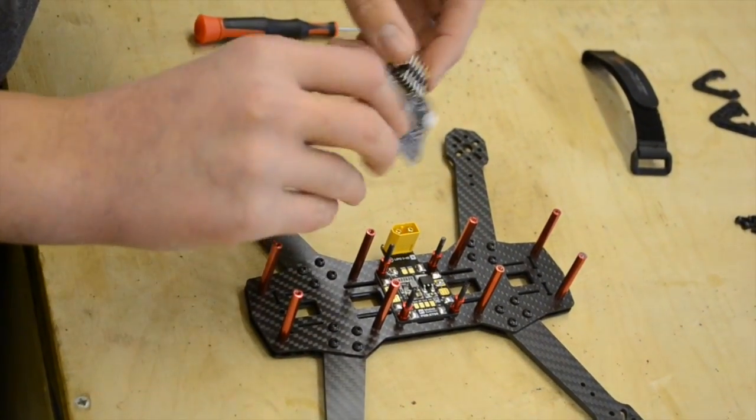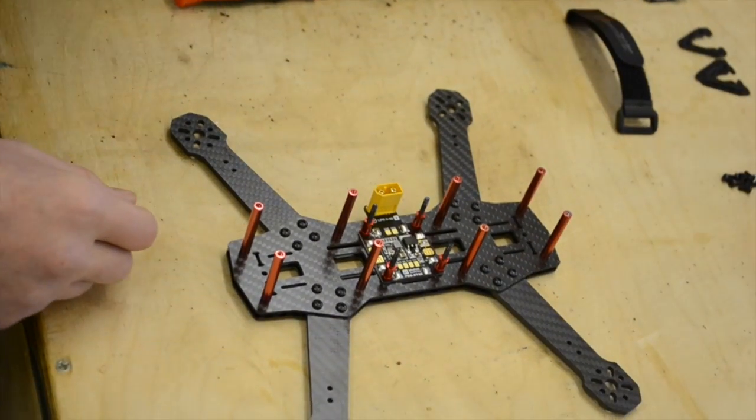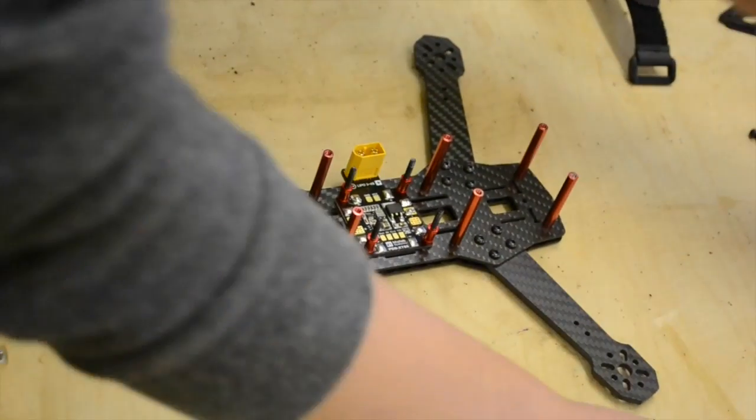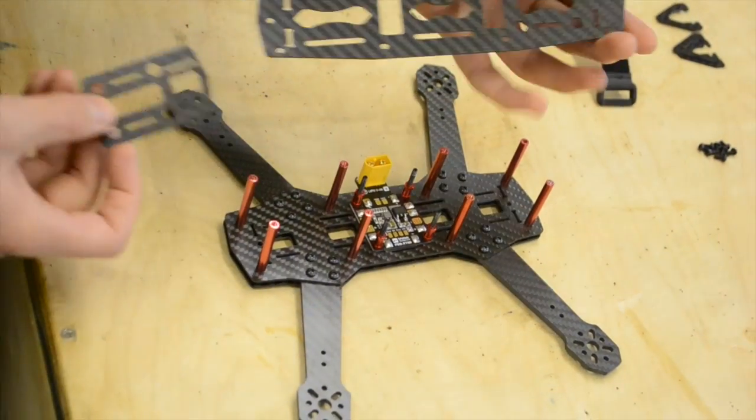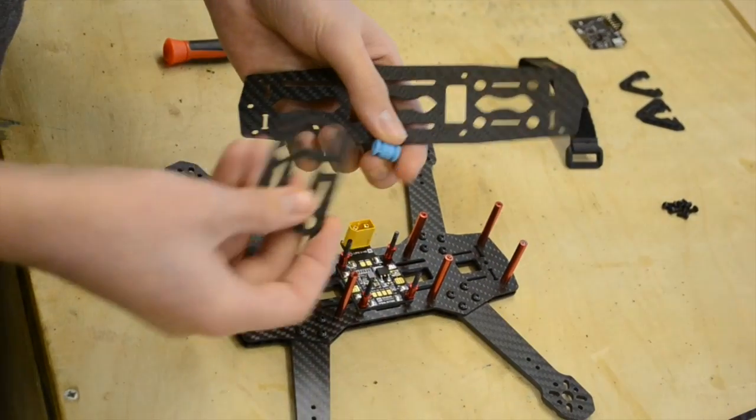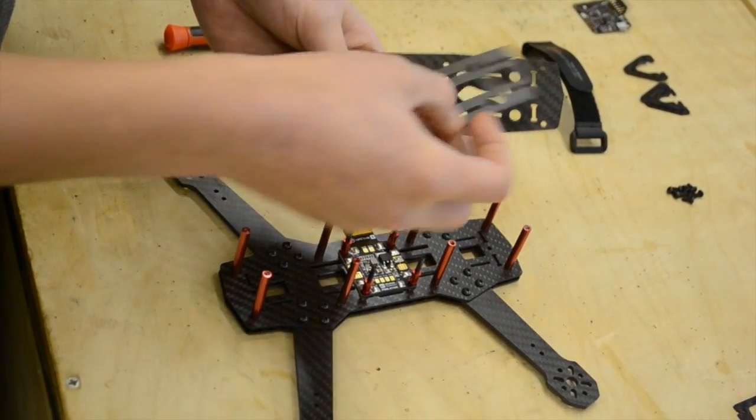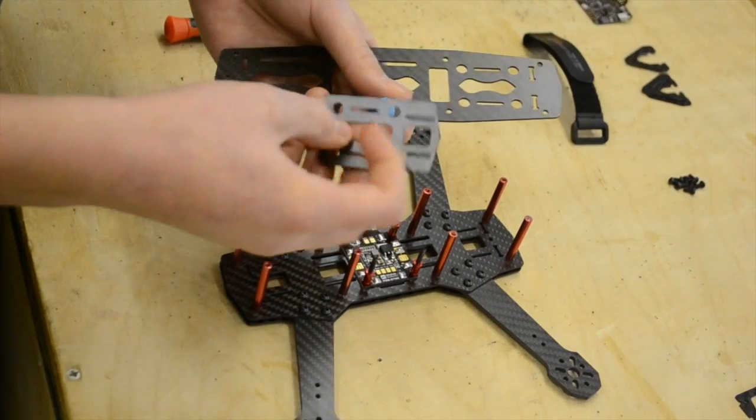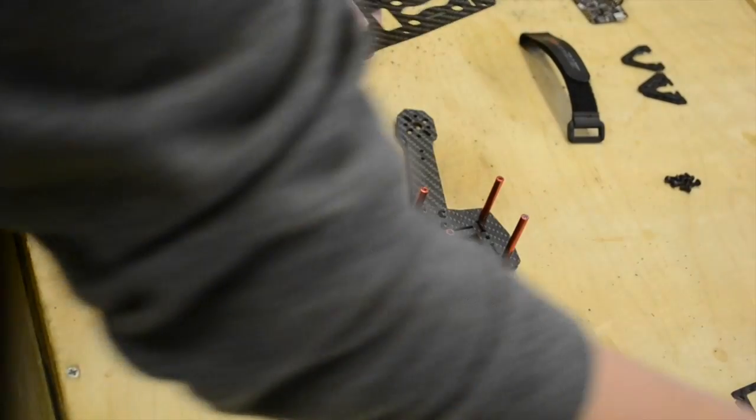You have to solder all these pin headers on as well. I'll probably go through that. This top plate here, you have to put these blue grommet things onto this piece here and onto that piece, which is the vibration dampening mount.